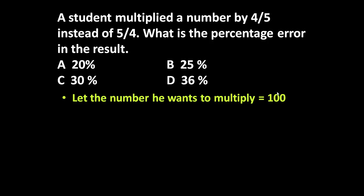He wants to multiply this 100 by 5/4, but he multiplied by 4/5. So to solve this question, let us assume the number he wants to multiply is equal to 100. The calculated value, because he multiplied this 100 by 4/5, is 100 times 4/5, which equals 80. This is the answer which he got.